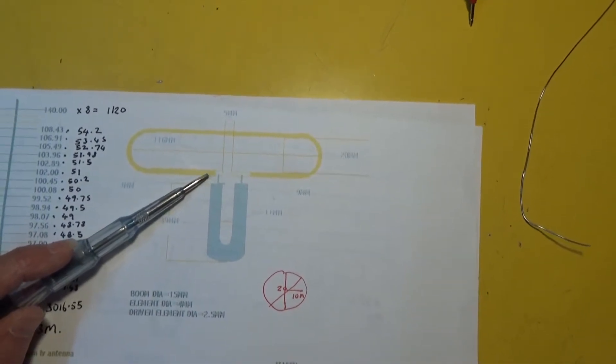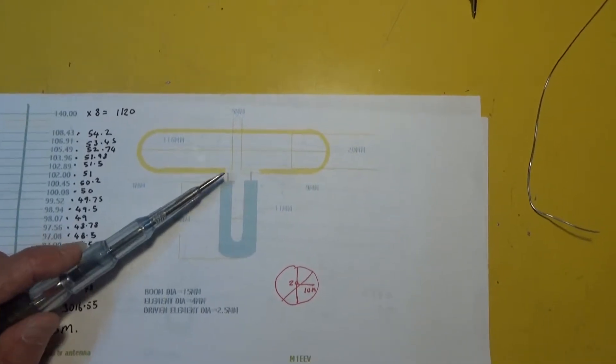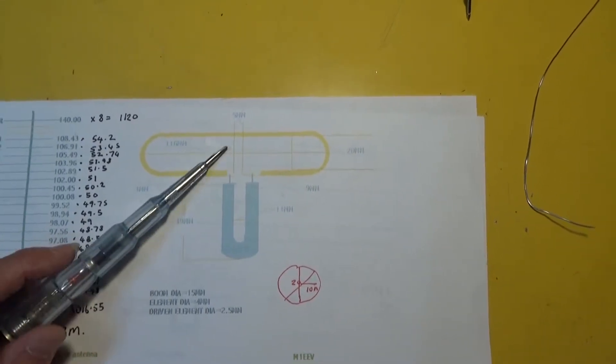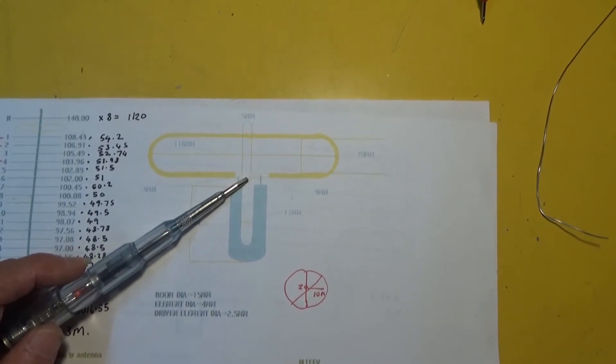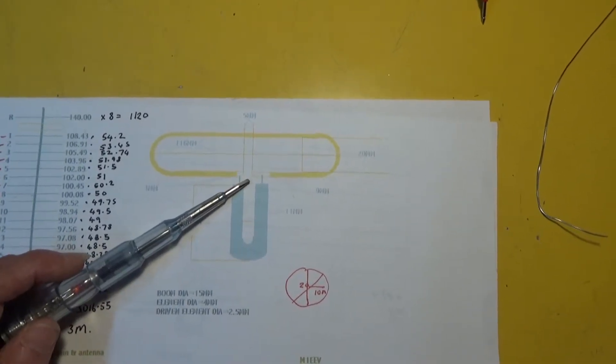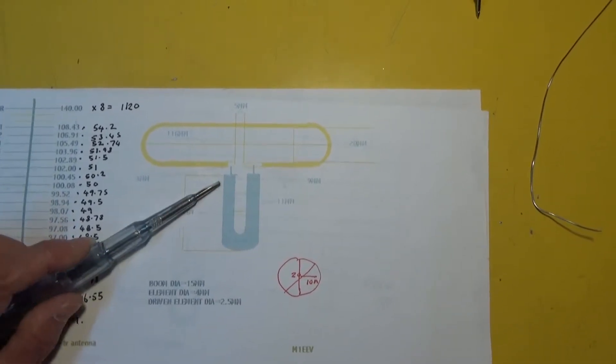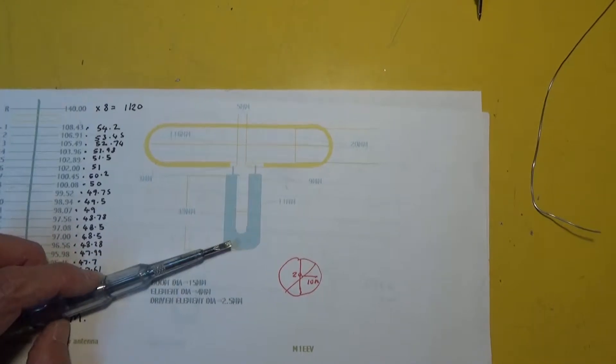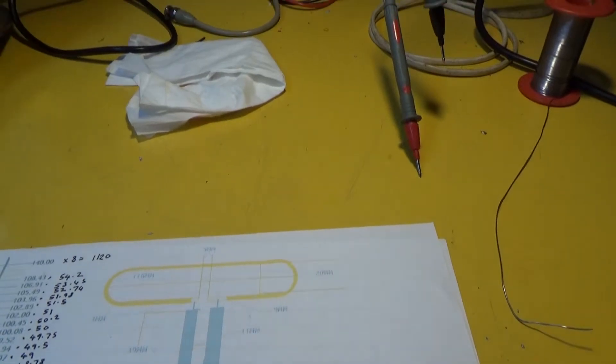The folded dipole is made of copper wire and then because it's a balanced folded dipole you need to convert it to an unbalanced output so you use a balun which is made up of semi-rigid coax.